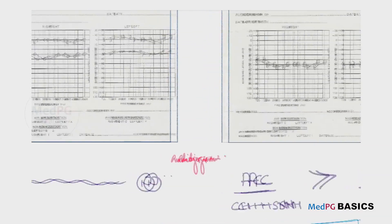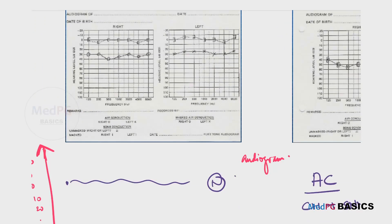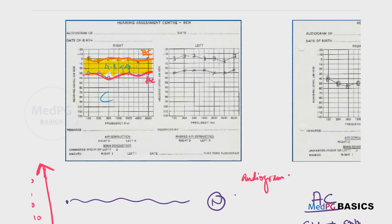Here we can see the graph of a patient with conductive hearing loss. The bone conduction is normal, and the air conduction is pushed down with a gap between the two. This gap is referred to as the air bone gap, and if this exists, it is a conductive hearing loss.